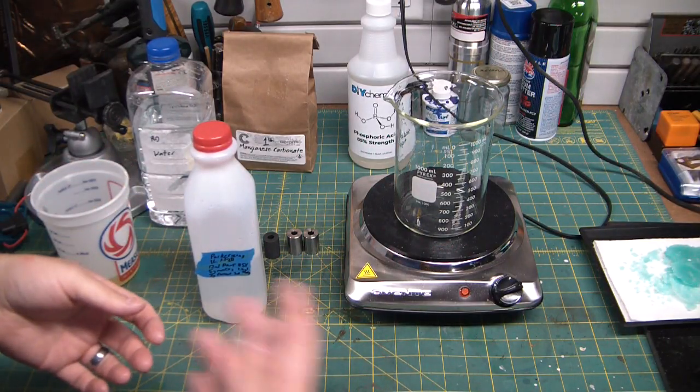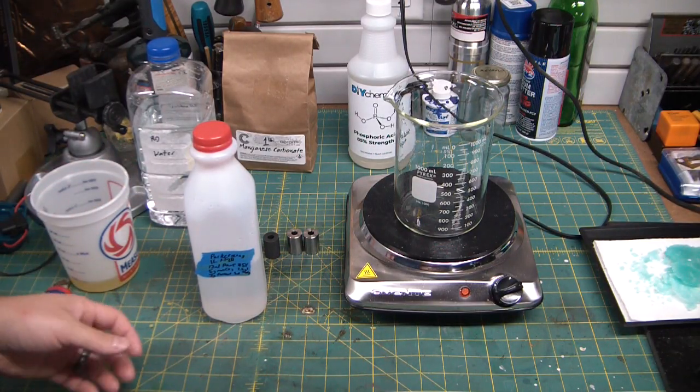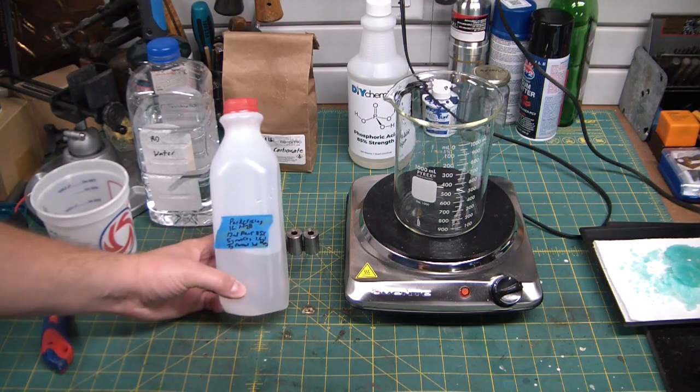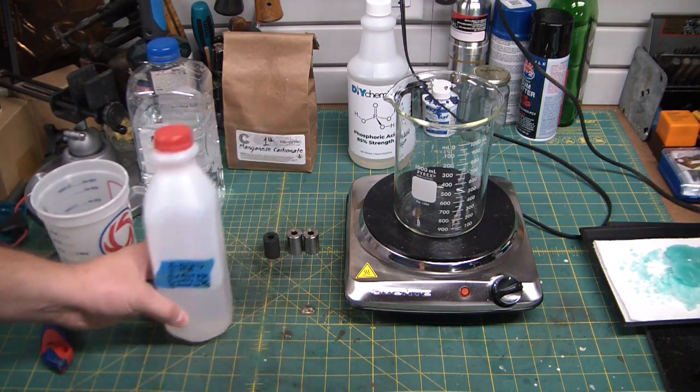You can adjust those numbers if you're using the weaker stuff from the Home Depot store, like the prep and etch, the Clean Strip. I don't know exactly what percentage that is. You might have to titrate it to test.